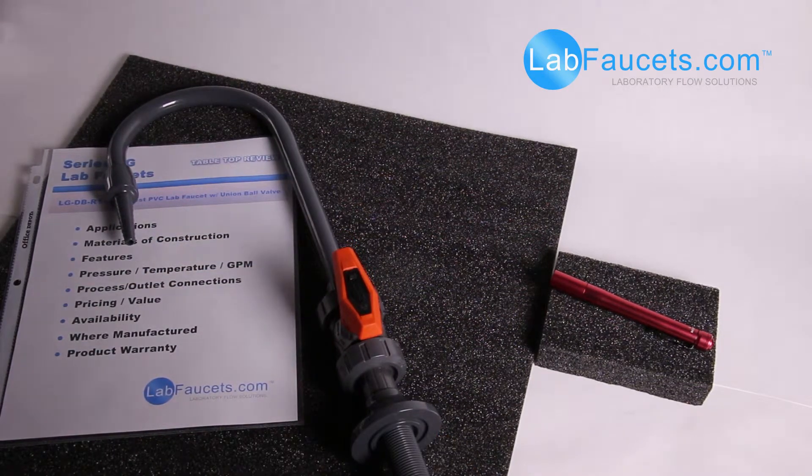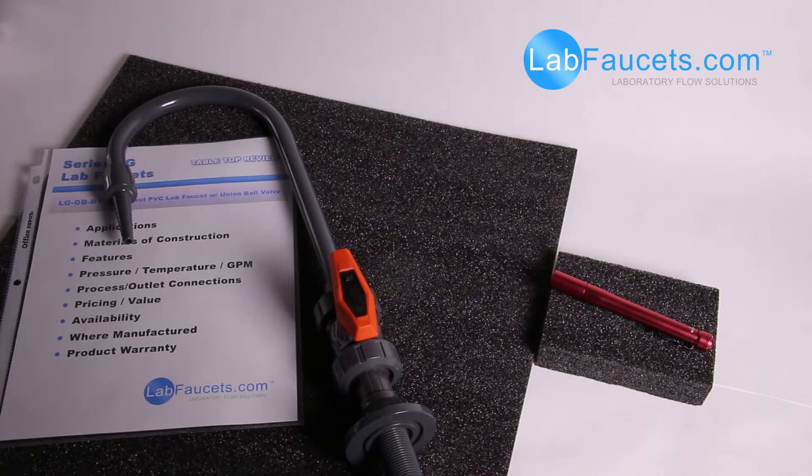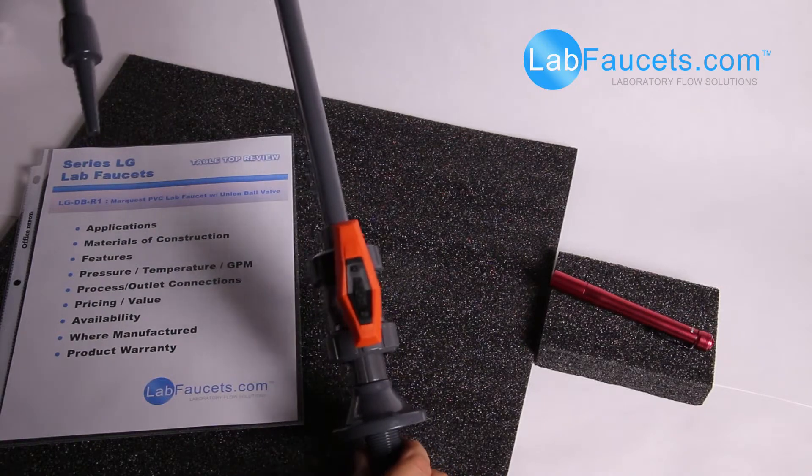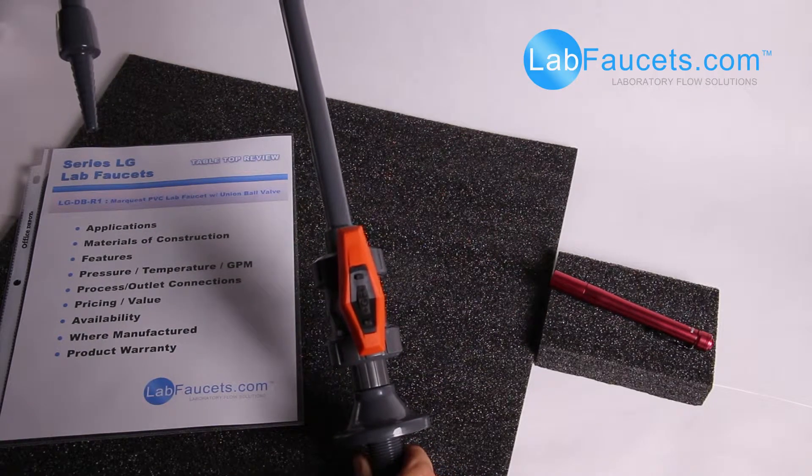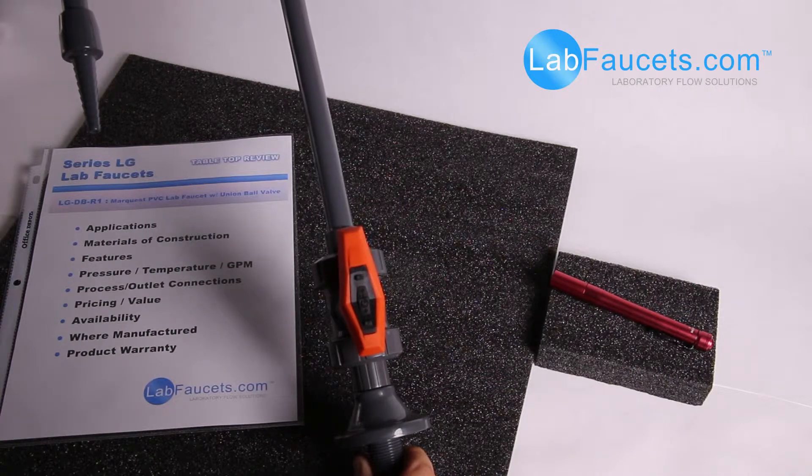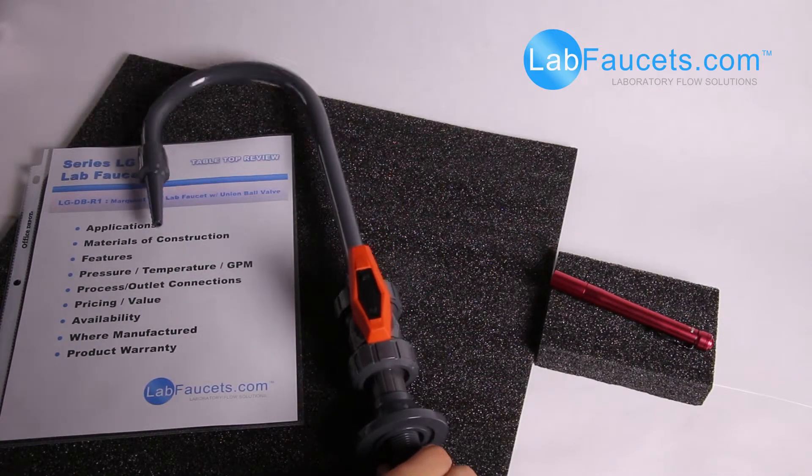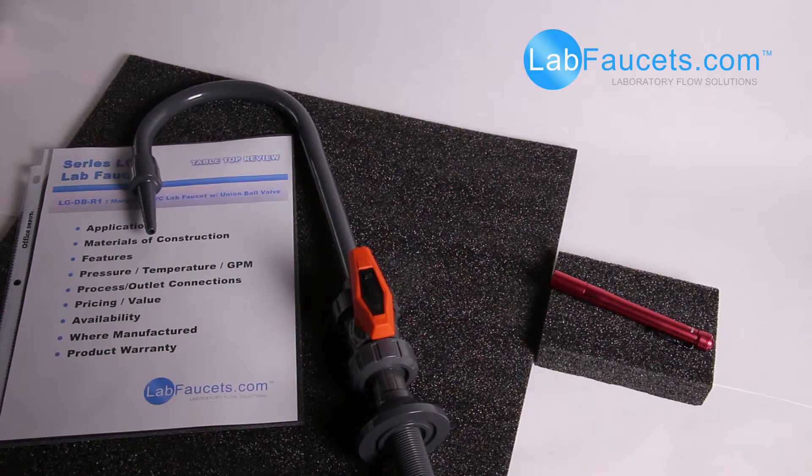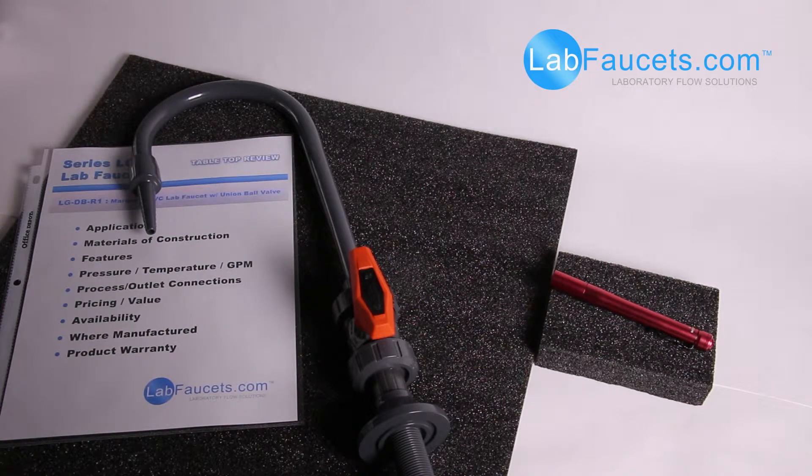Pressure, temperature, and gallons per minute. This faucet has a maximum operating pressure of 150 PSI at ambient temperature. Gallons per minute, this faucet at 73 PSI, 74-75 PSI city pressure, will dispense approximately 6.3 to 6.5 gallons per minute.